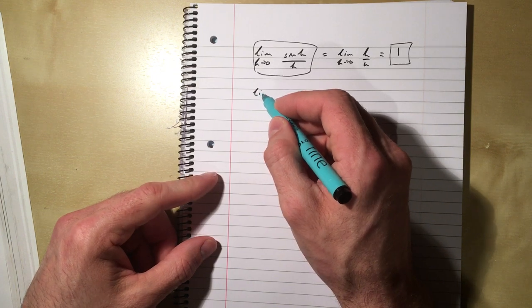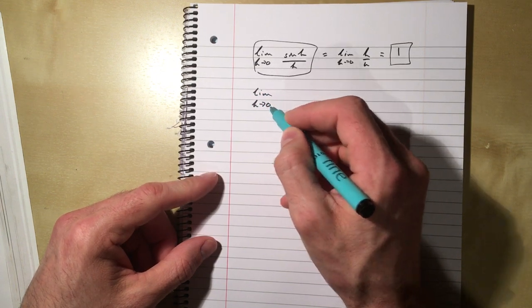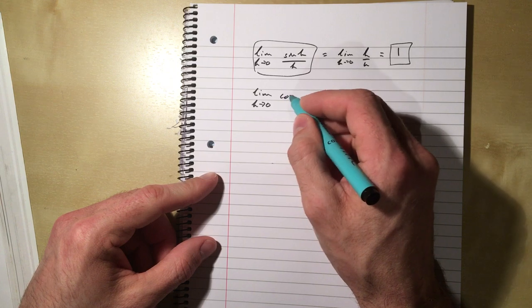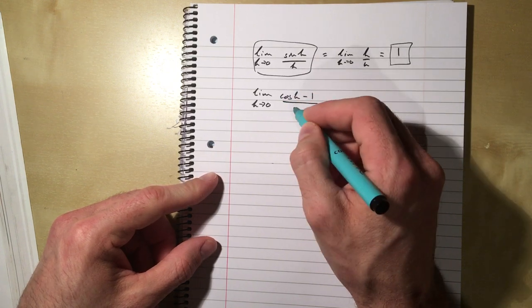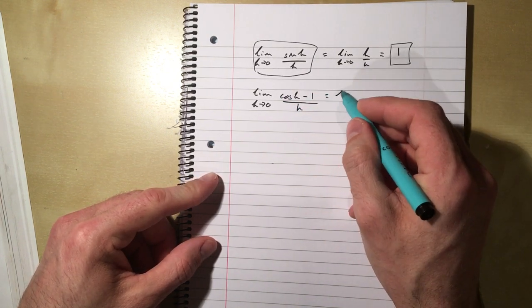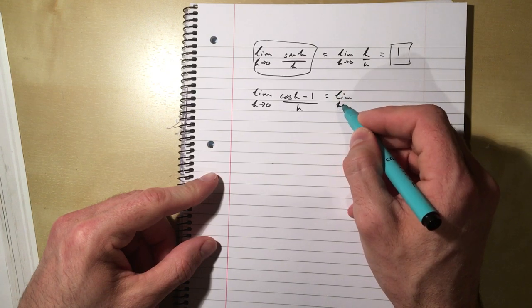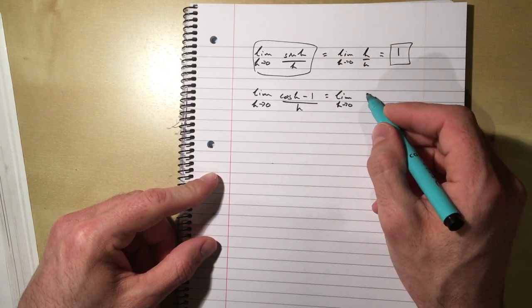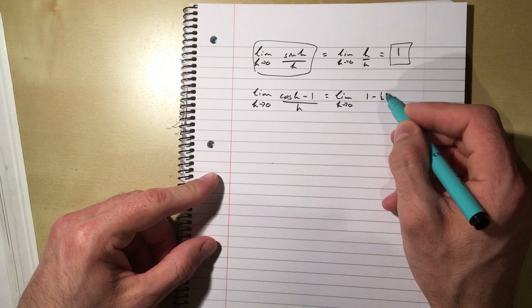And we're also going to look at this limit, because we're going to need this one as well in a second, which is cos h take away 1 over h. Well, when h is small, cos h, we know, is 1 minus 1 half h squared.